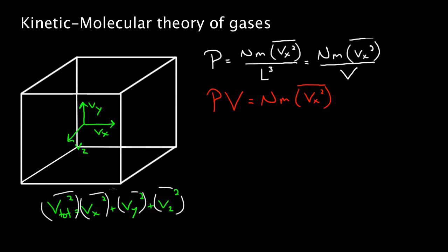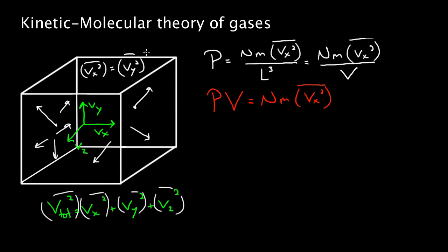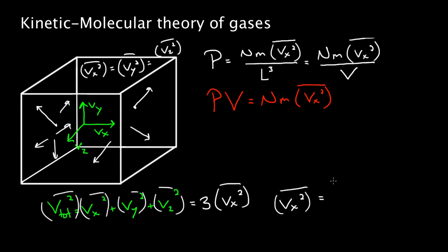I'm going to claim that the particles are flying around randomly — there's no preferred direction. They have just as much velocity on average in every direction as in any other. So the average of Vx squared equals the average of Vy squared equals the average of Vz squared. Therefore the average of V-total squared equals three times the average of Vx squared, which means the average of Vx squared equals the average of V-total squared divided by three.